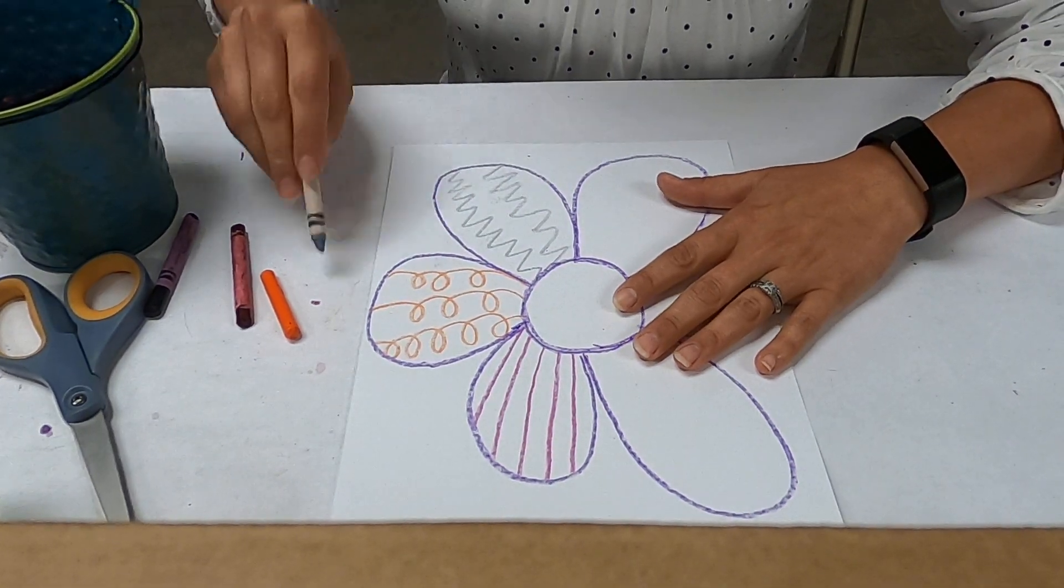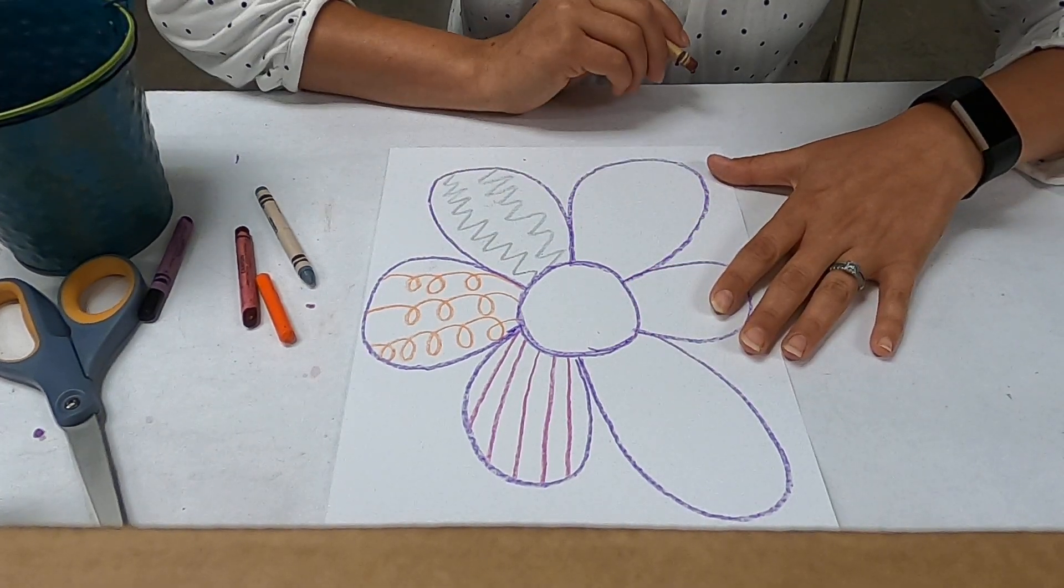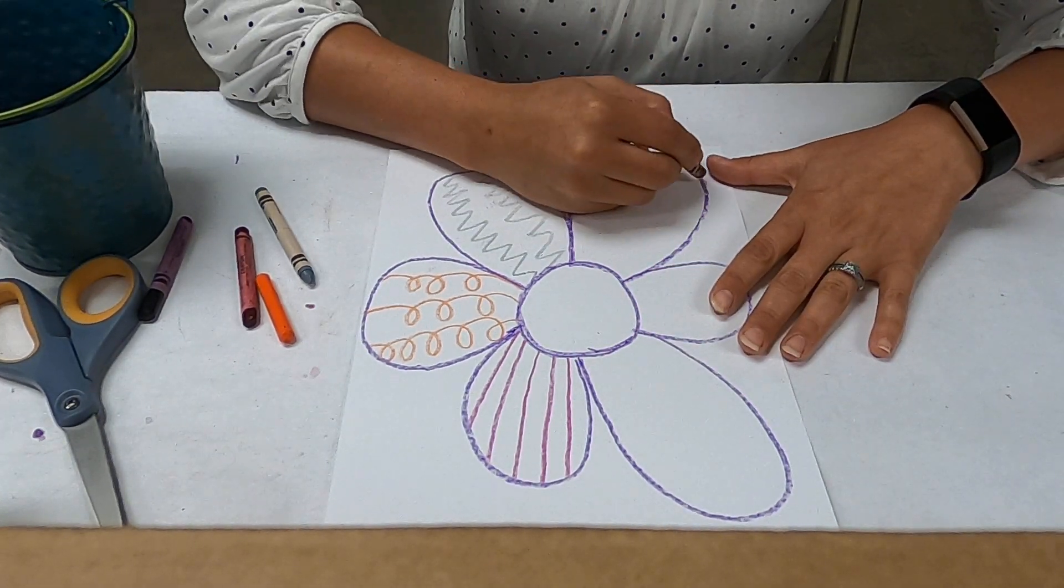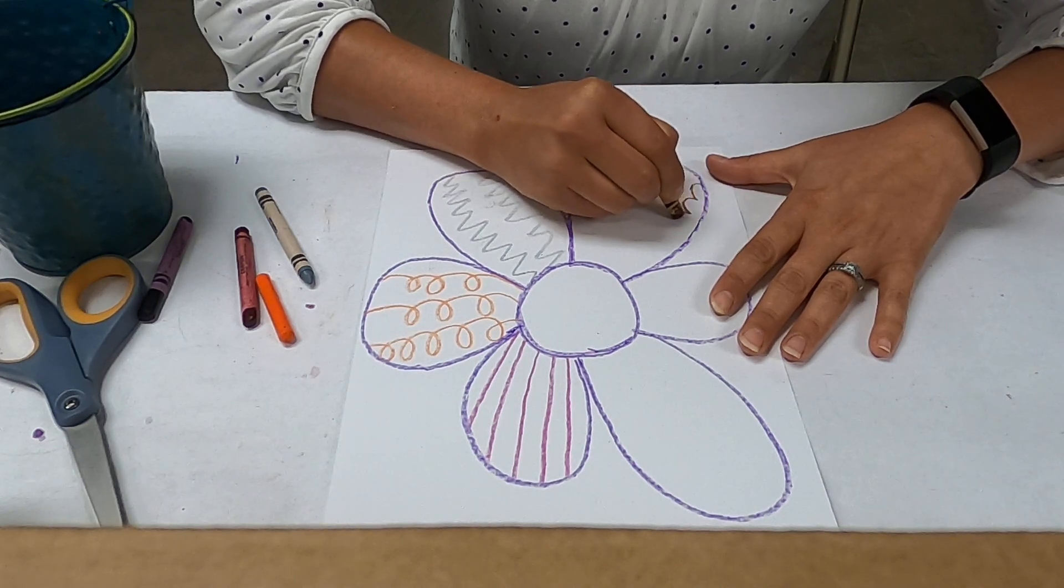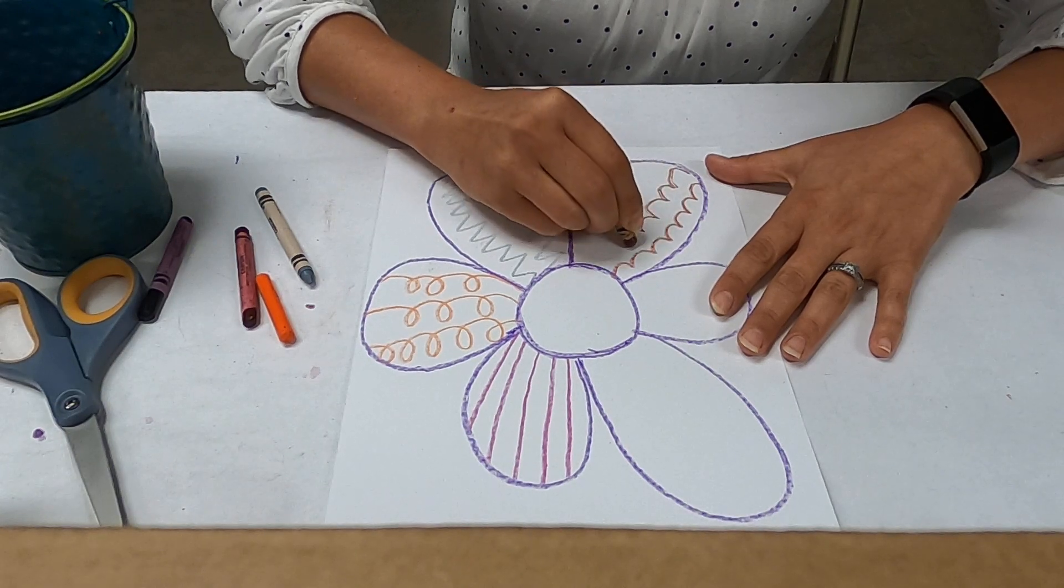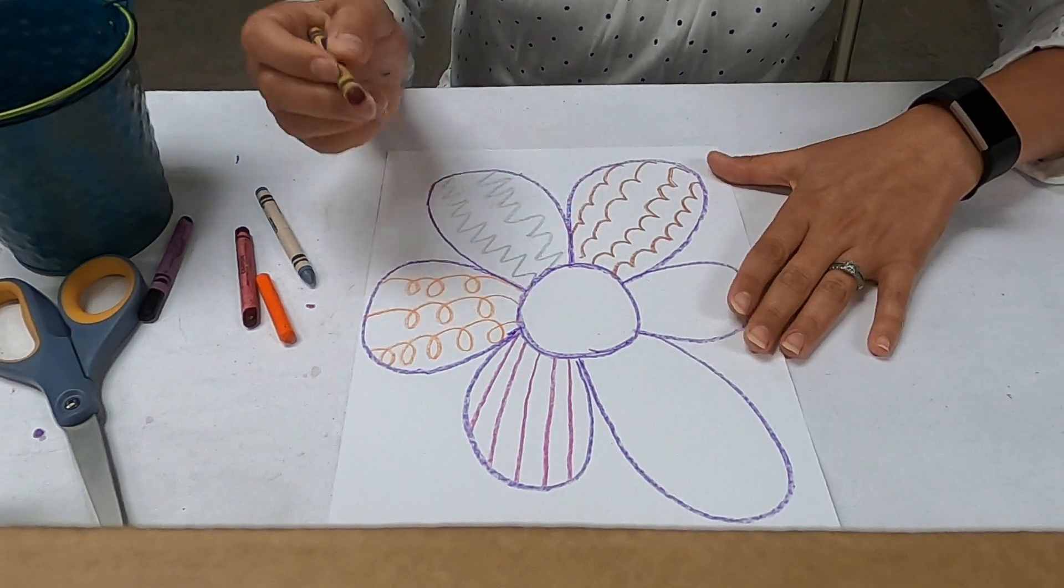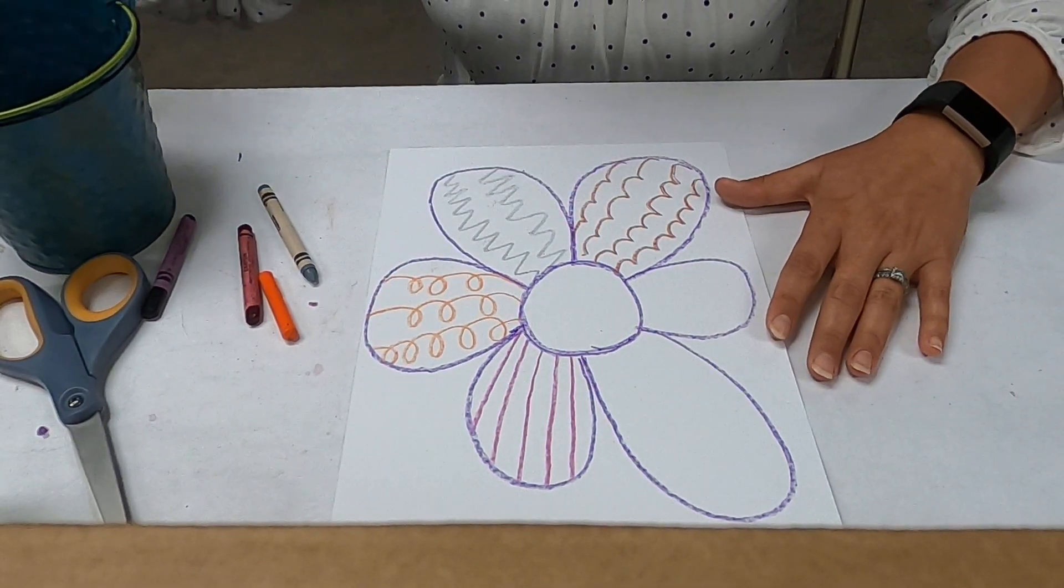And they can be any kind of design, any kind of color that you want. How about a brown and let's do some wavy, a wavy line. Almost looks like a bunch of U's or W's. Okay, that's another type of line right there.